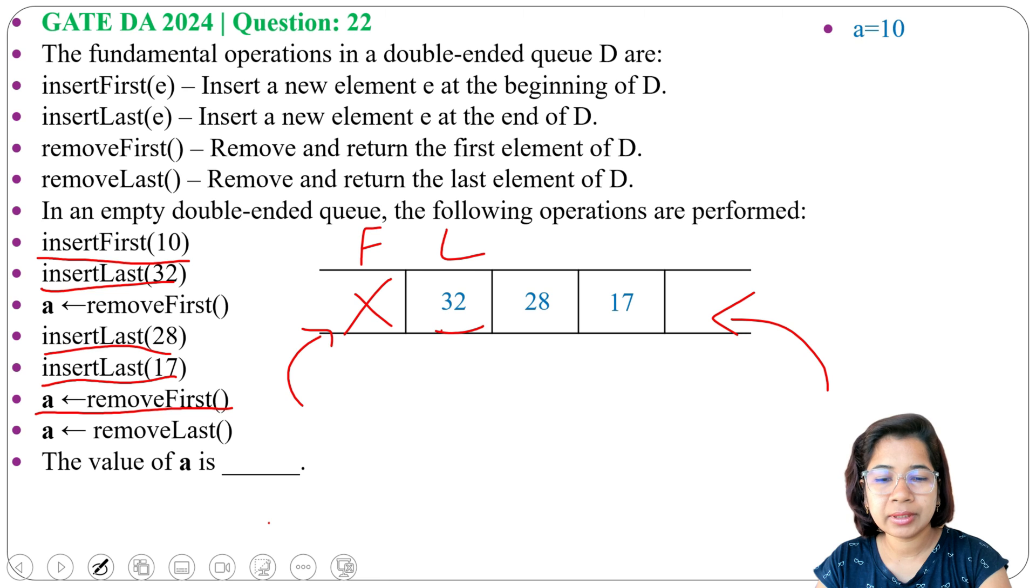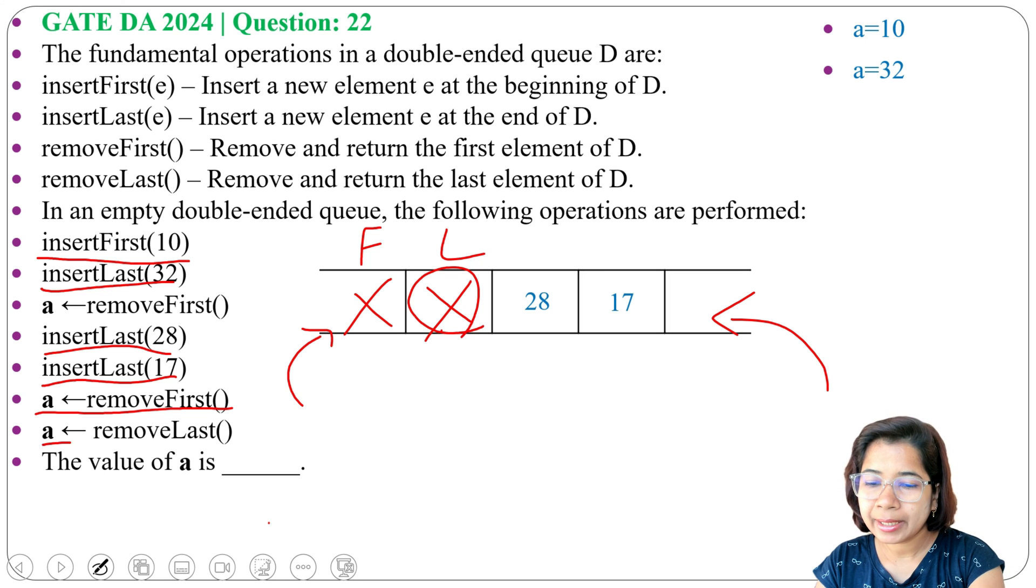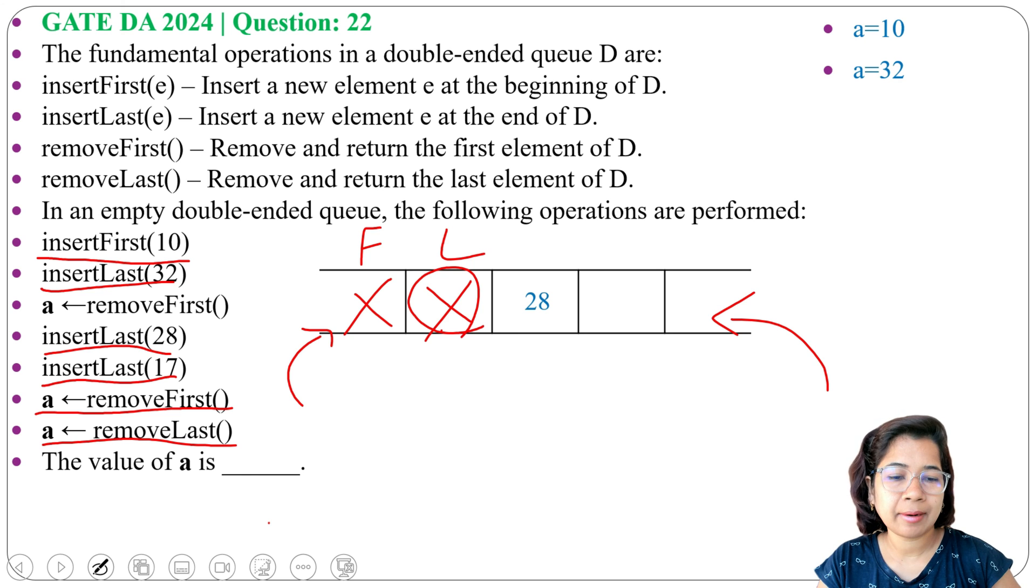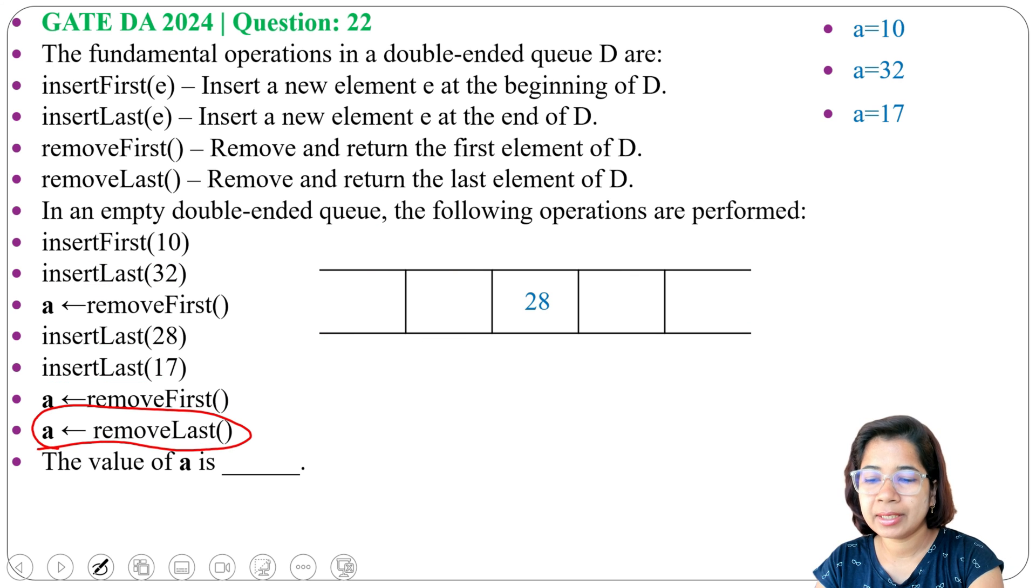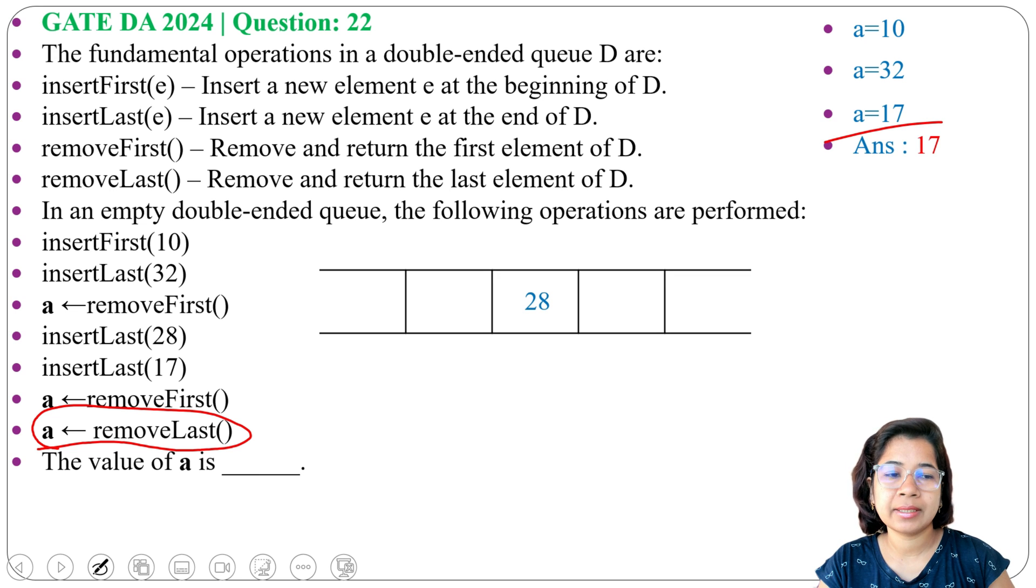After removal of 10, now 32 is the first, so we will remove 32. Now a contains 32. Next a ← removeLast, so now last is 17, so we will remove 17. After removal of 17, now a contains 17. So the last removal is 17 that a holds now. That's why a value is 17.